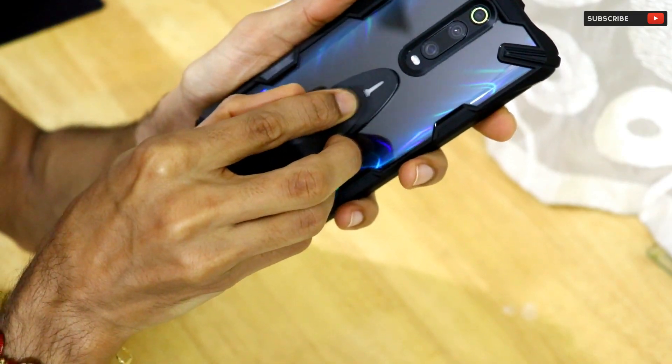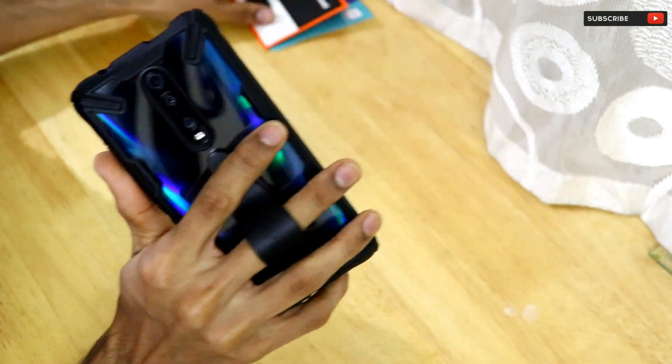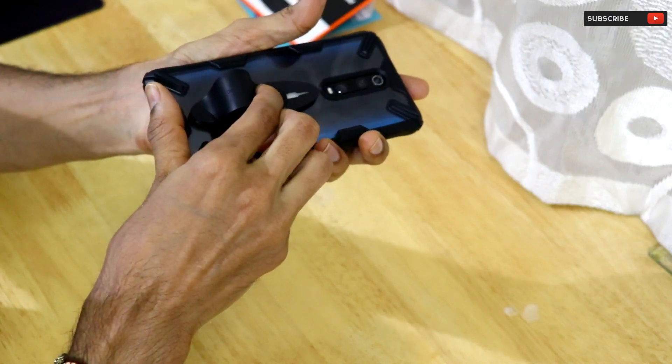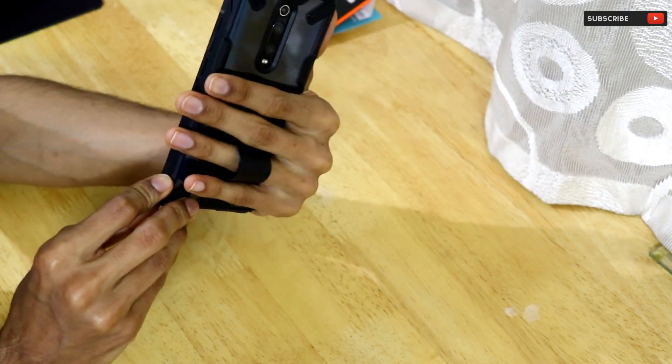You can hold your smartphone like this and easily use it. The second step is you can even slide it over like this and make it to the second level, where you can easily use your third finger or other fingers.